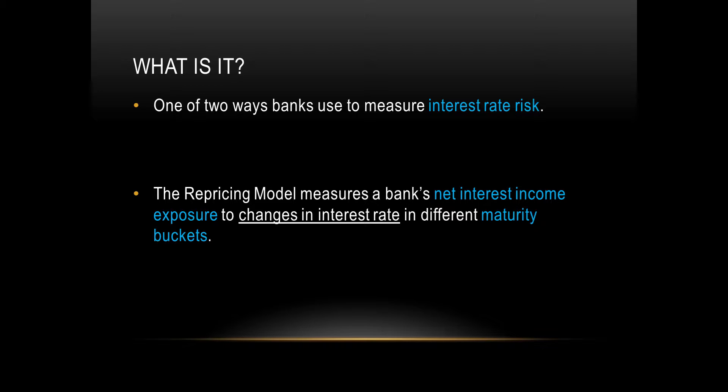When we say measure interest rate risk, interest rate risk is simply the risk a bank faces if interest rates were to go in a direction that's unfavorable for the bank. So if interest rates go up, is that a good or a bad thing for a bank? And same if they go down, is that good or bad? Well, it depends on something called the repricing gap, which we'll cover very shortly. What the repricing model does is it measures a bank's net interest income exposure to interest rate changes in different maturity buckets.